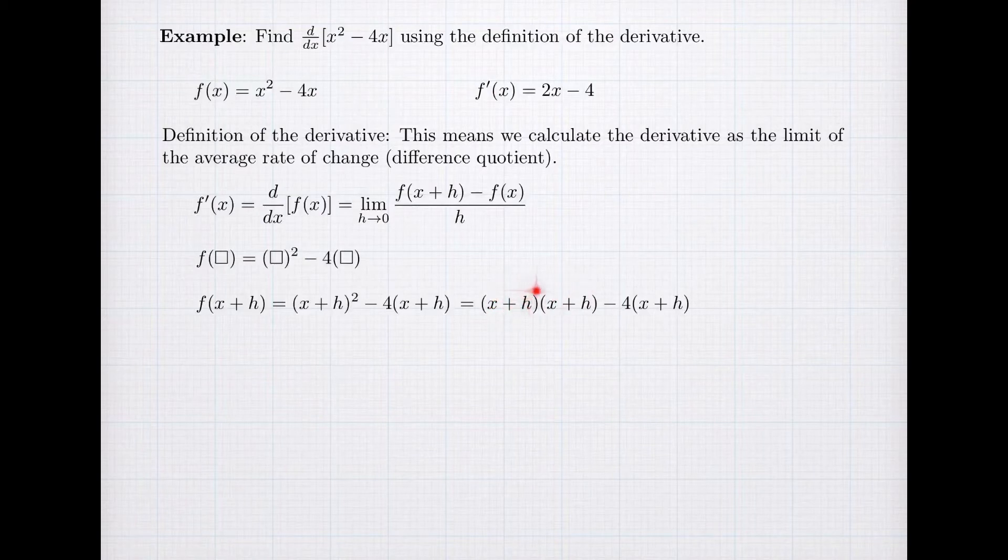h times x, and h times h, and we'll expand that all out. In addition, we are going to take this negative 4 and distribute it to the x and to the h. So we get negative 4x and negative 4h.